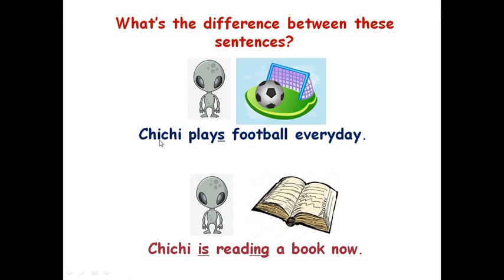Let's read the first one. Почитаем первое. Read with me, читай вместе со мной. Чичи plays football every day. Чичи — это имя этого инопланетянина, который изображен на картинке. Чичи plays football every day. Let's translate. Давай переведем. Чичи играет в футбол каждый день. Next example. Следующий пример. Read with me, читай вместе со мной. Чичи читает книгу сейчас. What's the difference between these sentences? В чем разница?